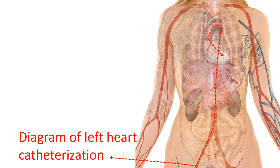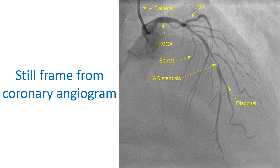Blood vessels in the groin, arm, and neck are chosen for this study. In adults, the test can be done under local anesthesia. In children, as they are afraid of procedures, general anesthesia is needed. A related test known as angiography is also often done along with cardiac catheterization.